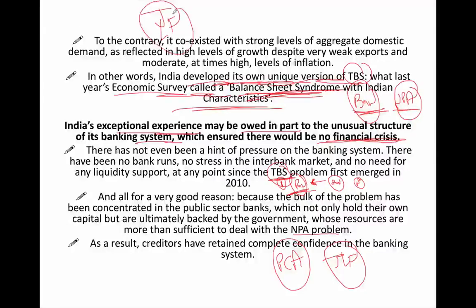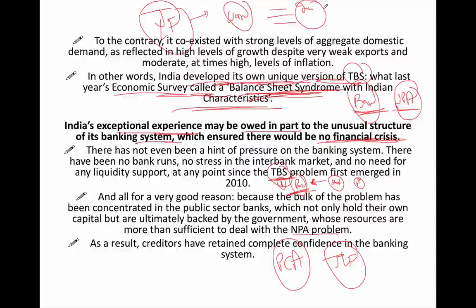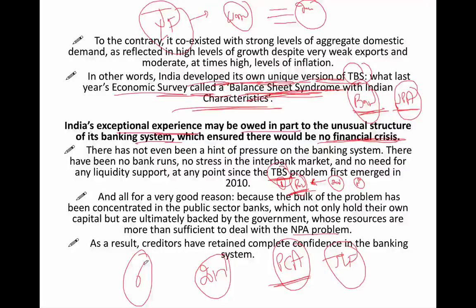RBI is also taking Prompt Corrective Action, and there is a Joint Lenders Forum. In the Joint Lenders Forum, banks get warning signs and can identify stress assets — for example, 'incipient stress' where there are signs that an account may go wrong. Banks put a red mark on that account and observe it more closely. In 2017, six banks have had Prompt Corrective Action initiated against them.